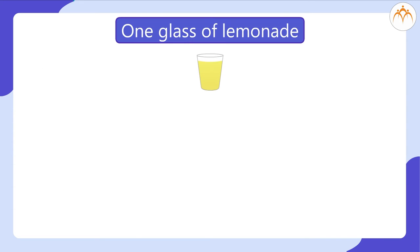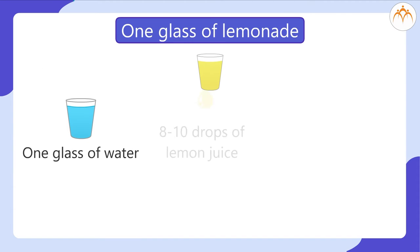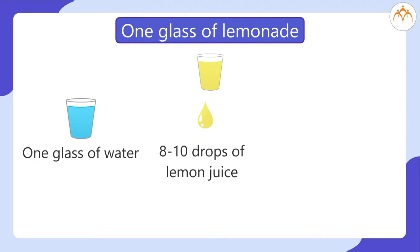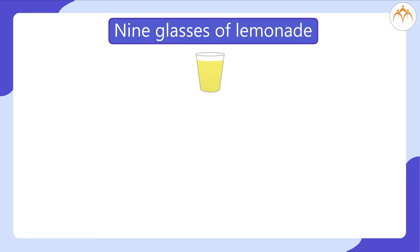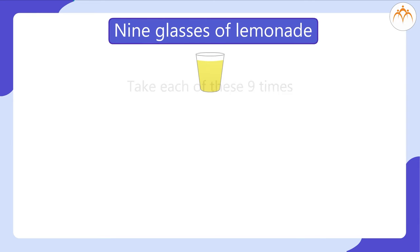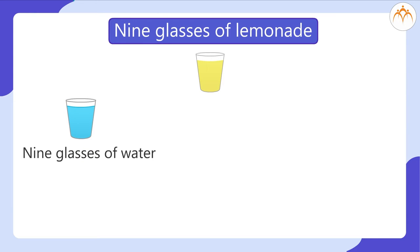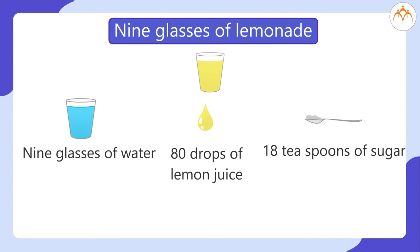For example, for one glass of lemonade, you need one glass of water, eight to ten drops of lemon juice, two teaspoons of sugar, and a pinch of salt. To make nine glasses of lemonade, you take each of these nine times: nine glasses of water, around 80 drops of lemon juice, 18 teaspoons of sugar, and nine pinches of salt.